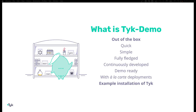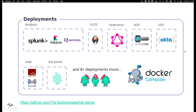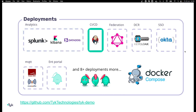What kind of deployments do we have out-of-the-box? The first one is the basic, which is an installation of Tyke with the main components. You could add to that analytics, which will be having data in Splunk, Kibana, or Datadog. You could also have an idea of testing a CICD pipeline with Jenkins.